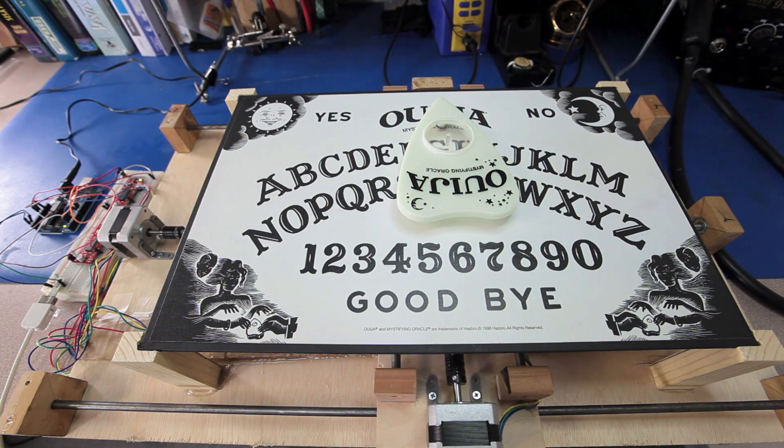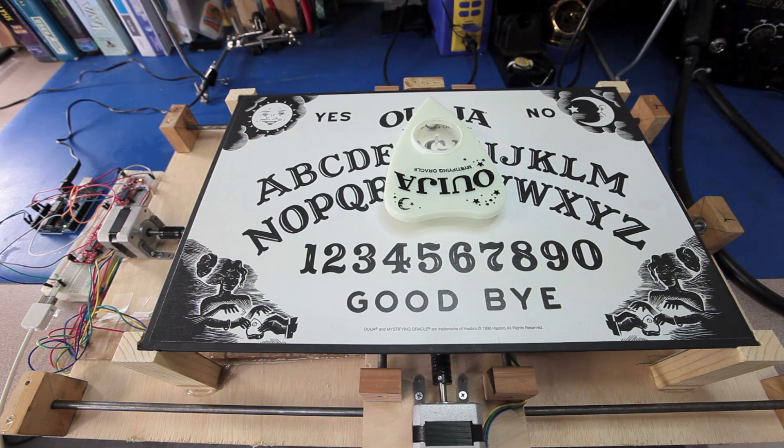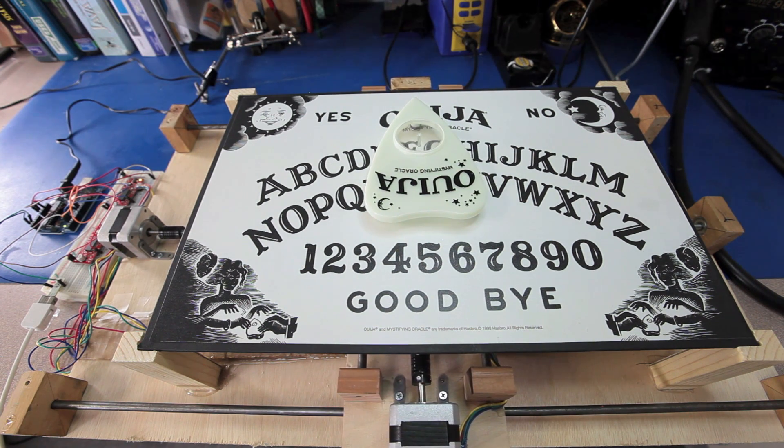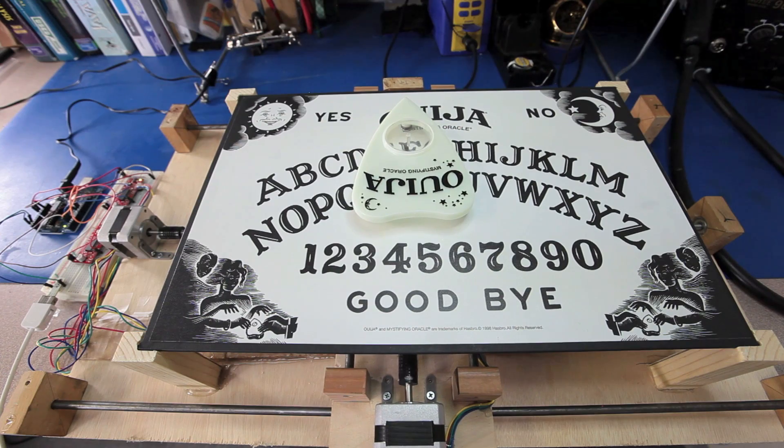Here we can see the Arduino in action. We have the XY gantry underneath with some magnets on it, moving the planchette around, which also has magnets on it.